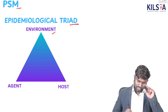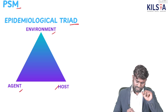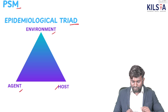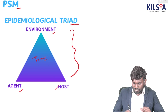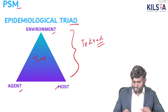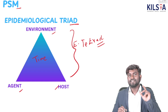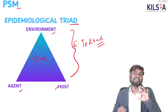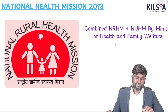Environment, host, and agent — let's go. Once again: environment, host, and agent. If time is added, it becomes the epidemiological tetra. Please remember: if the original triad includes environment, agent, and host, when time is added along these three it becomes the epidemiological tetra.